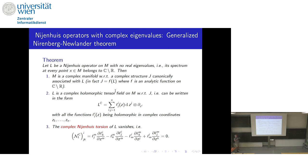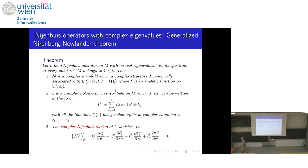If you take a Nijenhuis operator L and plug it into this function, you get the complex structure. For any real analytic function f, the operator f(L) is also a Nijenhuis operator. Regarding convergence of the power series: it converges provided the spectrum lies within the radius of convergence, which is the case when the function is i on one component and minus i on another. It is indeed a non-trivial result.